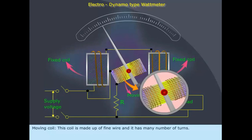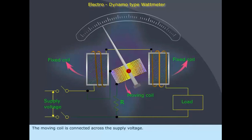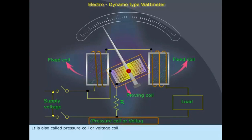Moving coil: This coil is made up of fine wire and has many turns. The moving coil is connected across the supply voltage. It is also called the pressure coil or voltage coil.